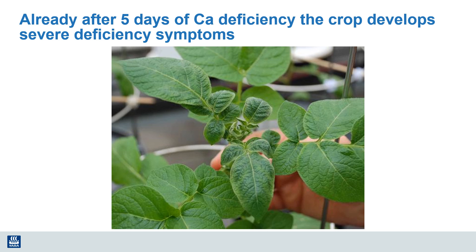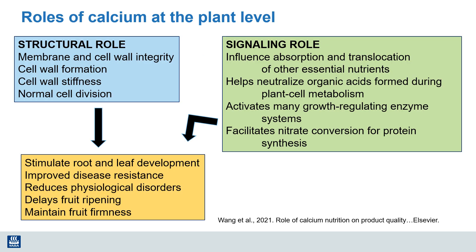Calcium deficiencies often show up on the leaves as necrotic lesions on the leaf margins. Sometimes the leaf tips turn brown or yellow. Sometimes we see cup-shaped leaves in grasses, sometimes the leaves become spiraled, and then the growing point actually dies because the plant can no longer make new cells and membranes. All aspects of calcium nutrition — whether structural or signaling — must work together to stimulate root and leaf development, enhance disease resistance, reduce physiological disorders, and promote timely ripening of high-quality fruit.